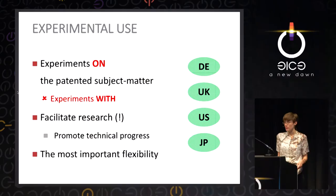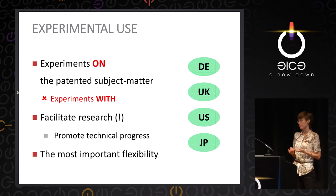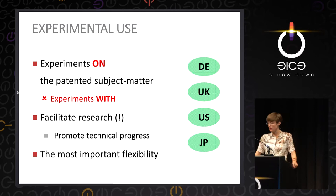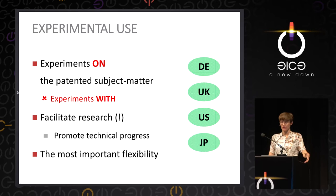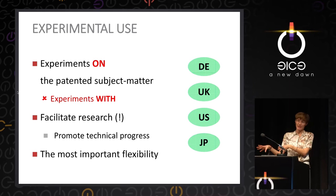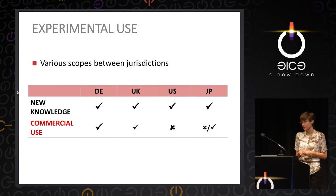Experimental use might be the most useful type of patent flexibility. You can find it in all studied systems. It's the most important patent flexibility because it serves technical progress — the further development and improvement of technical patented solutions. But importantly, it applies only to experiments you conduct on the patented subject matter itself. If you use a given patented device to test something else, that use will not be regarded as experimental use. The main prerequisite is adding new knowledge.